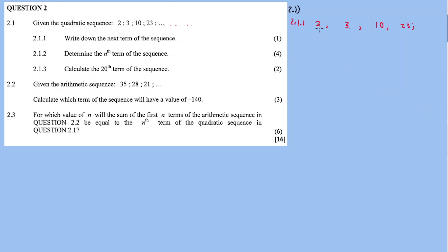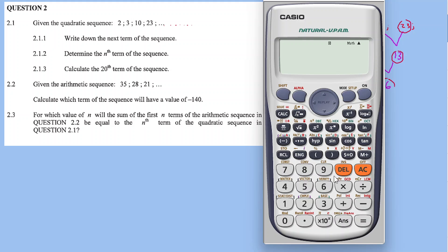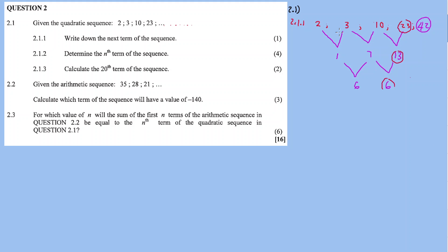First differences: 3−2=1, 10−3=7, 23−10=13. So first differences are 1, 7, 13 — giving a second common difference of 6. To find the next term, the next first difference is 13+6=19, and 23+19=42. So the next term is 42.